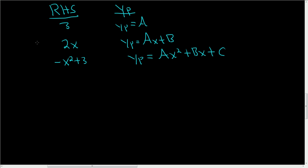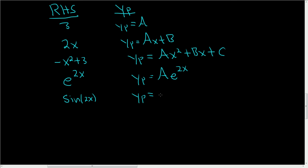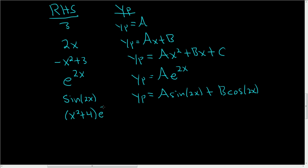If you have e^(2x), then y_p = A·e^(2x). If you have sin(2x), it gets a little tricky — you need to involve both sine and cosine, so y_p = A·sin(2x) + B·cos(2x). If you have something like (x² + 4)·e^(3x), it's a quadratic times an exponential, so y_p = (Ax² + Bx + C)·e^(3x).